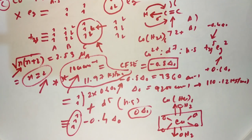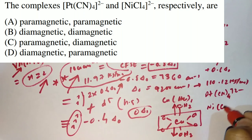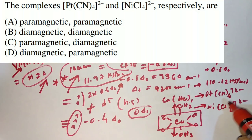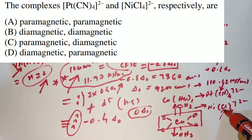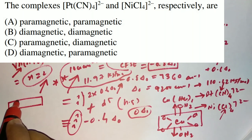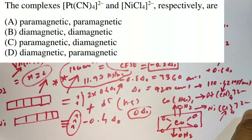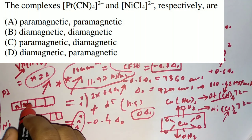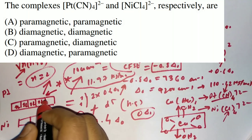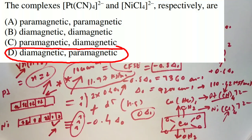The next question from JAM 2016 compares Pt(CN)4²⁻ and NiCl4²⁻. Both are d⁸ systems, but CN⁻ is a strong-field ligand giving low-spin, and Cl⁻ is weak-field giving high-spin. For platinum (d⁸, strong field, square planar): one two three four five six seven eight — no unpaired electrons, so diamagnetic. For nickel (d⁸, weak field): two unpaired electrons, so paramagnetic. Option D is correct.